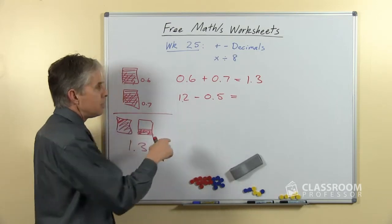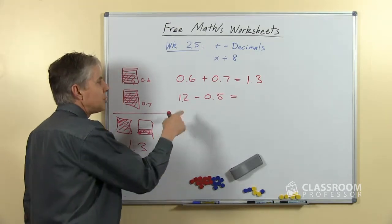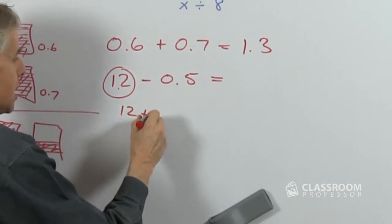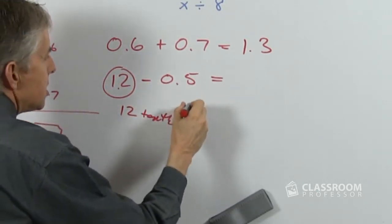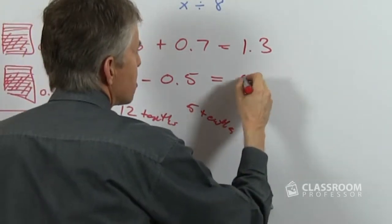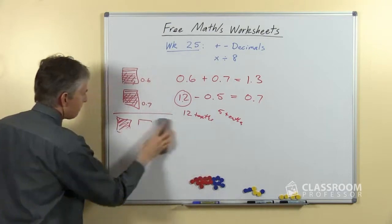Similar one, 1.2 take away 0.5 or 1 and 2 tenths. The students will have to be able to see that's 12 tenths and this is 5 tenths and so 12 take away 5 is 7 tenths, 0.7.